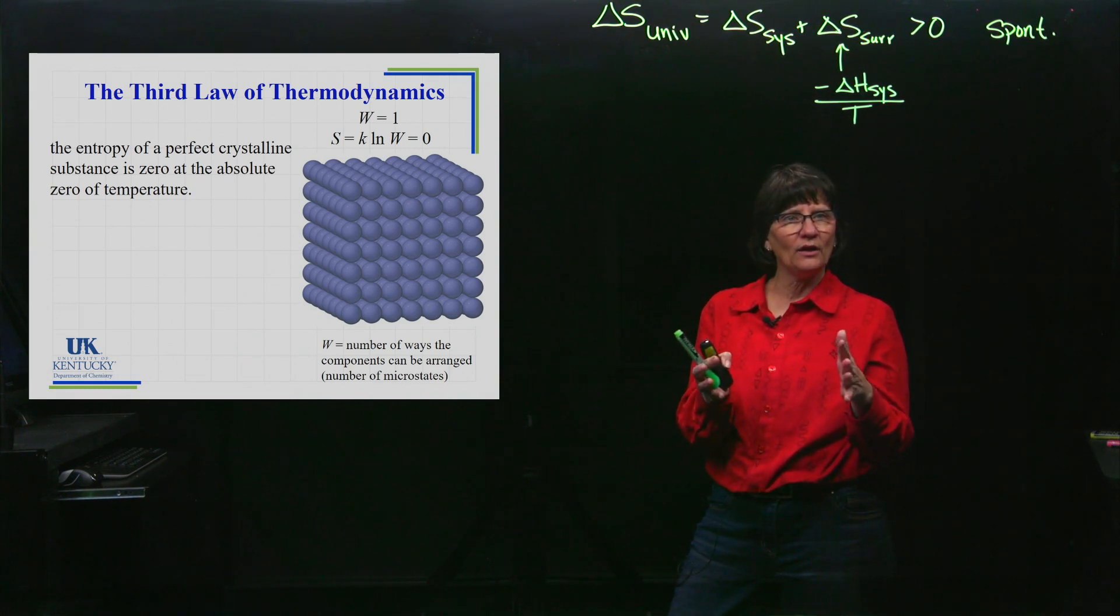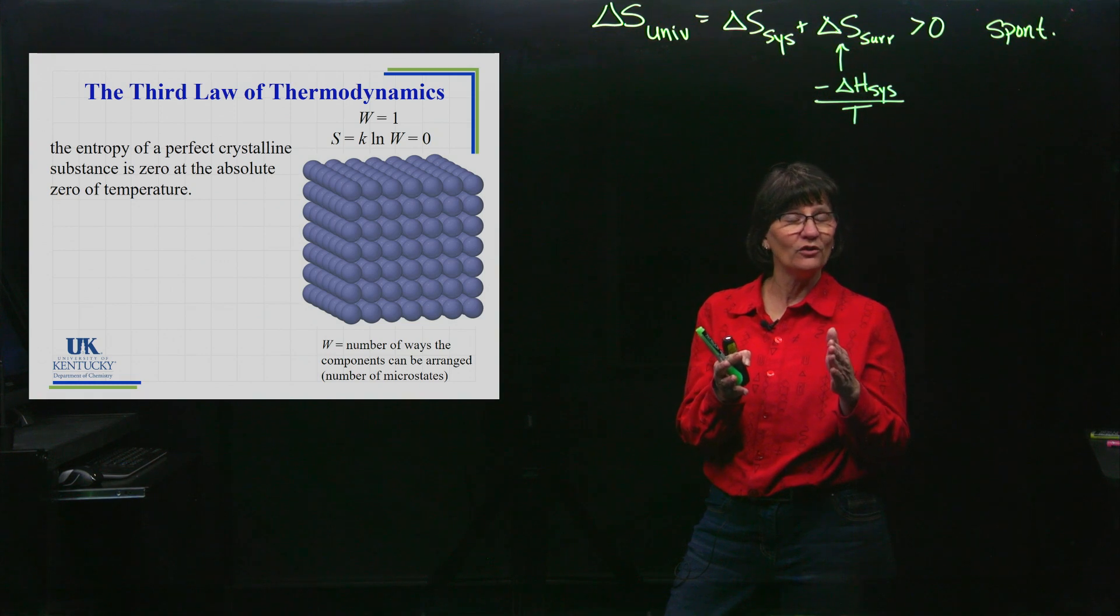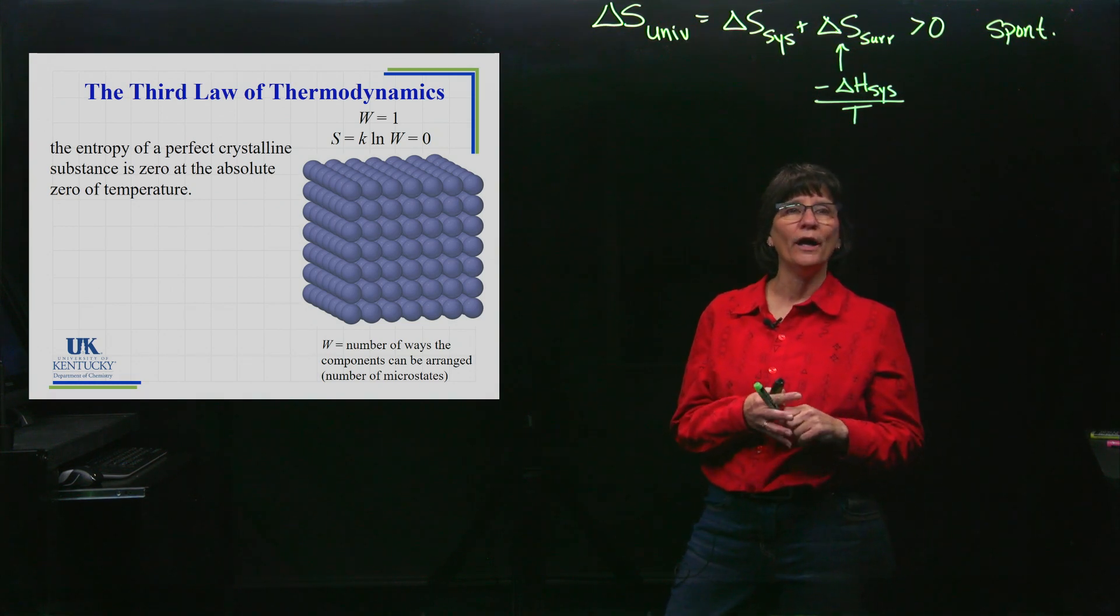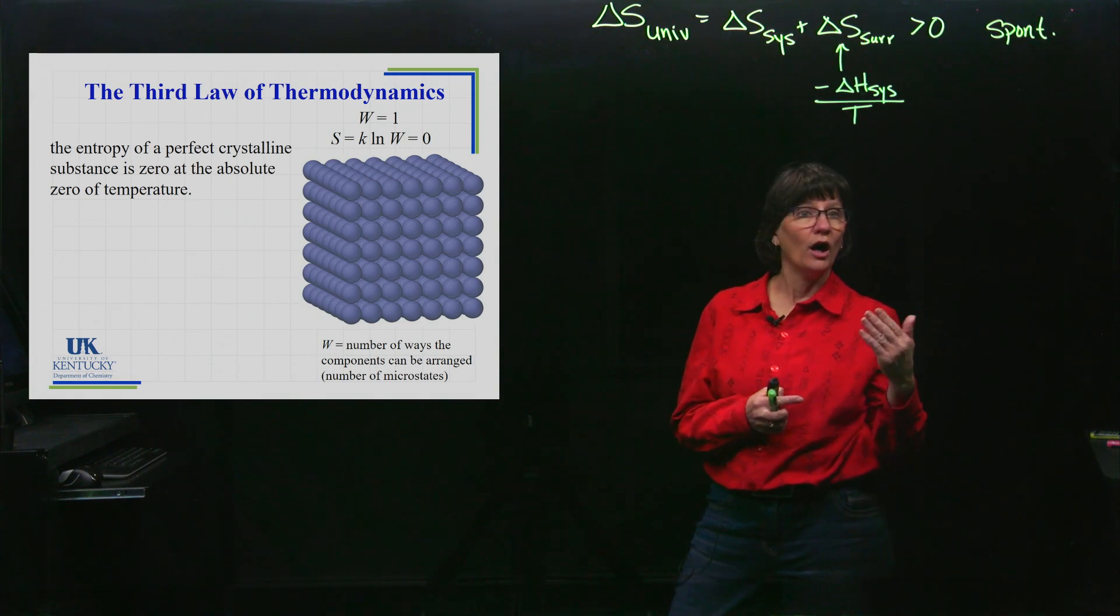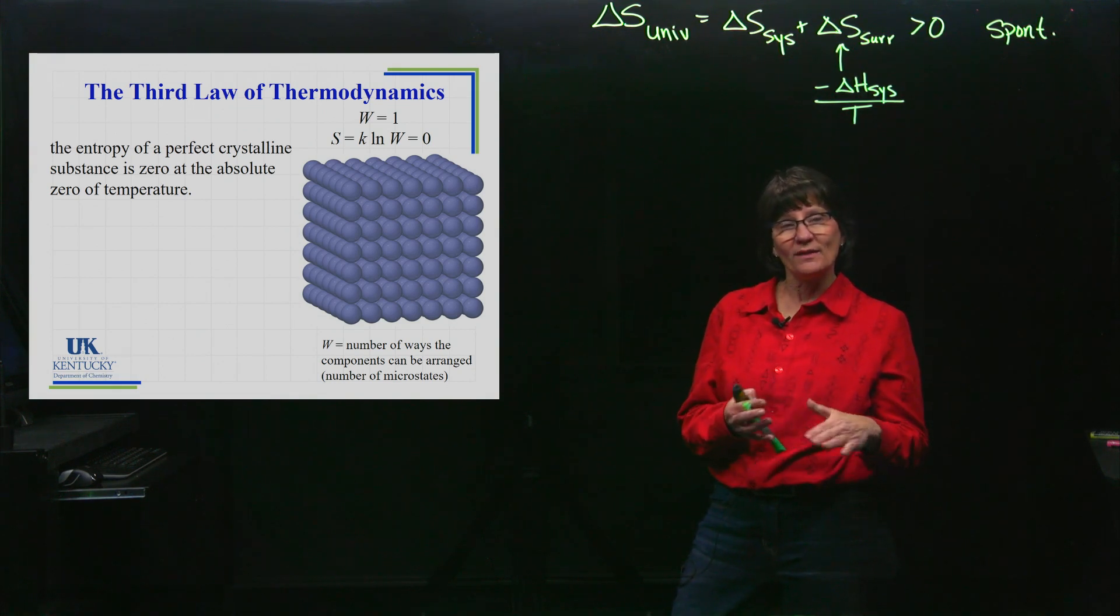The vibration starts slowing and slowing, and if you could get to absolute zero, they would stop. No movement at all. How many different ways can you arrange those atoms? There's only one way, and they're all sitting very still. That would be a W (microstate) of one. The natural log of one is zero, so that would be a zero value for the entropy.